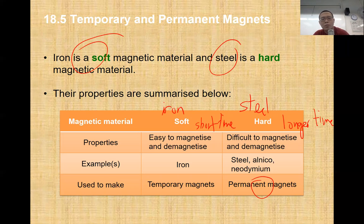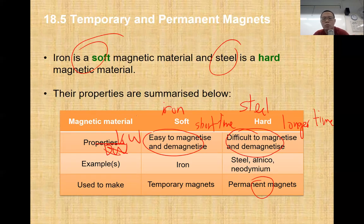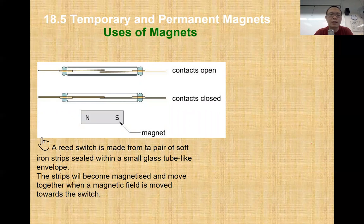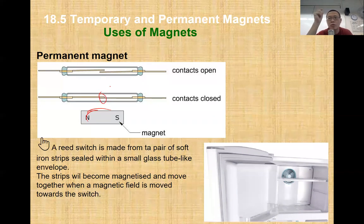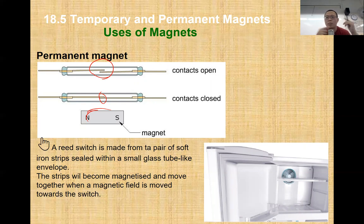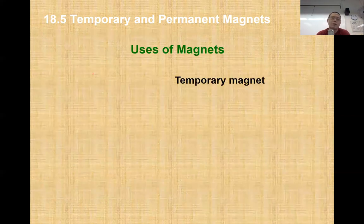When answering questions, you need to be careful about the keywords to use regarding why iron or steel bars are used - it's about the magnetizing and demagnetizing effect. There are various uses of magnets: permanent magnets like fridge magnets, a reed switch with a pair of soft magnets where bringing a magnet nearby attracts the contact to close the circuit without a physical switch, and removing the magnet opens the circuit. Temporary magnets also have many uses - common ones include electromagnets, moving-coil loudspeakers, and moving-coil ammeters.